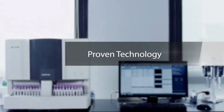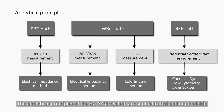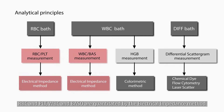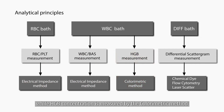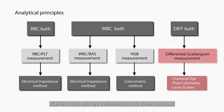Proven technology. The analytical principles of the BC5390 system are sophisticated and dependable. RBC and PLT, WBC and BASO are quantitated by the electrical impedance method, while HGB concentration is measured by the calorimetric method. White blood cells are differentiated by three methods: chemical dye, flow cytometry, and laser scatter.